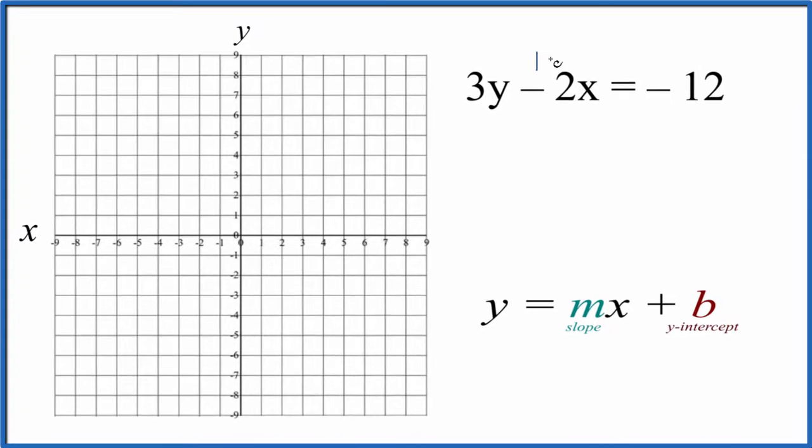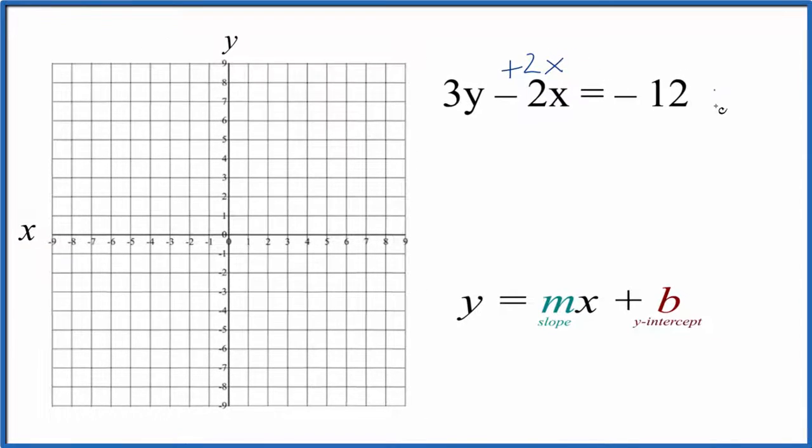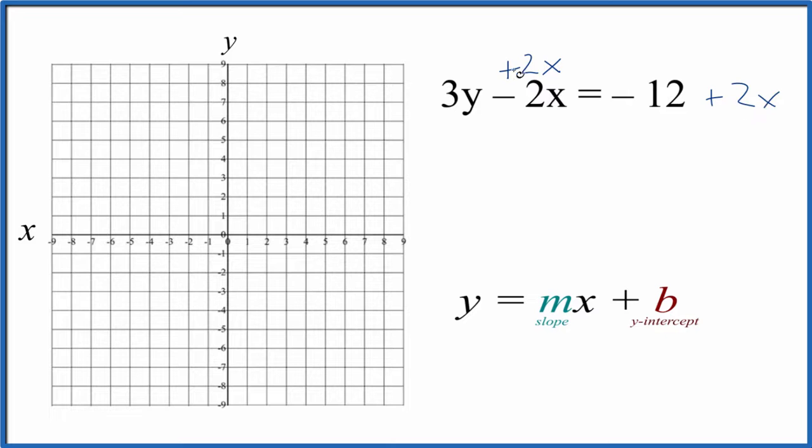Let's add 2x to both sides. If we do that, these will cancel out and we'll have 3y = 2x - 12, since the x comes first.